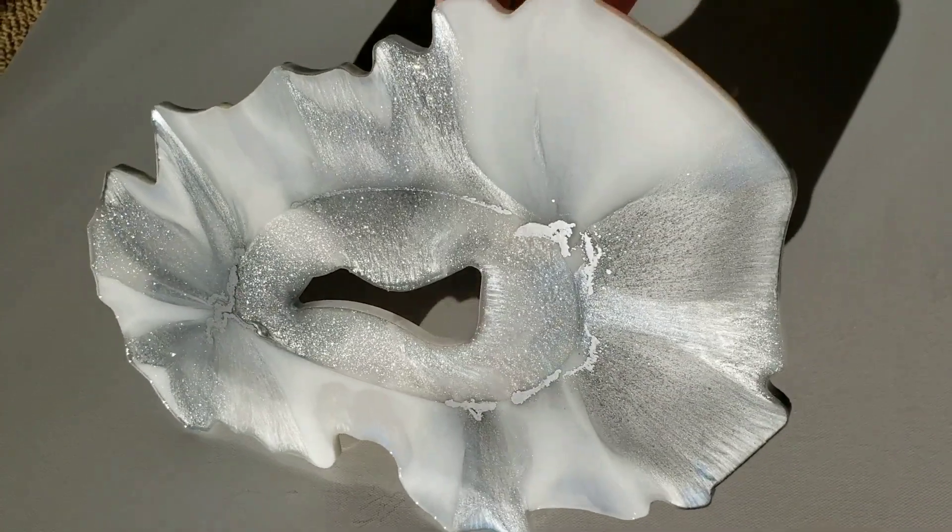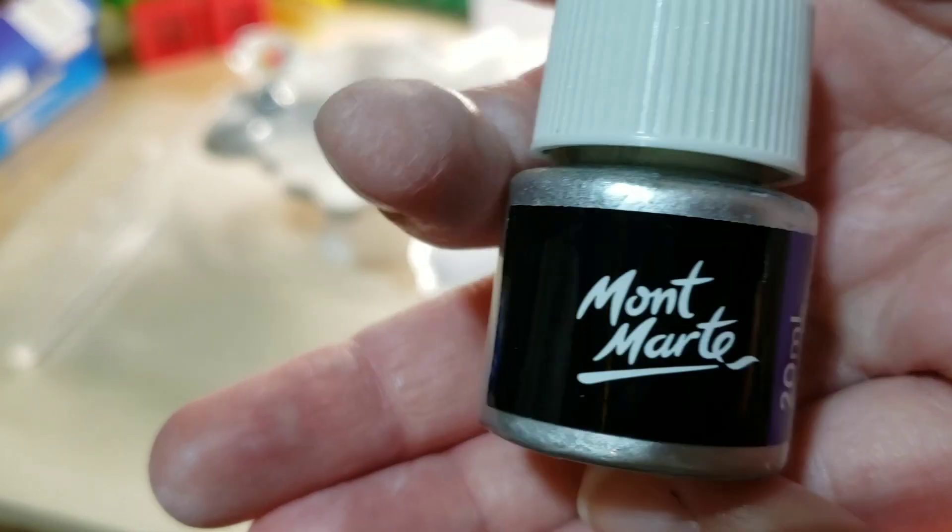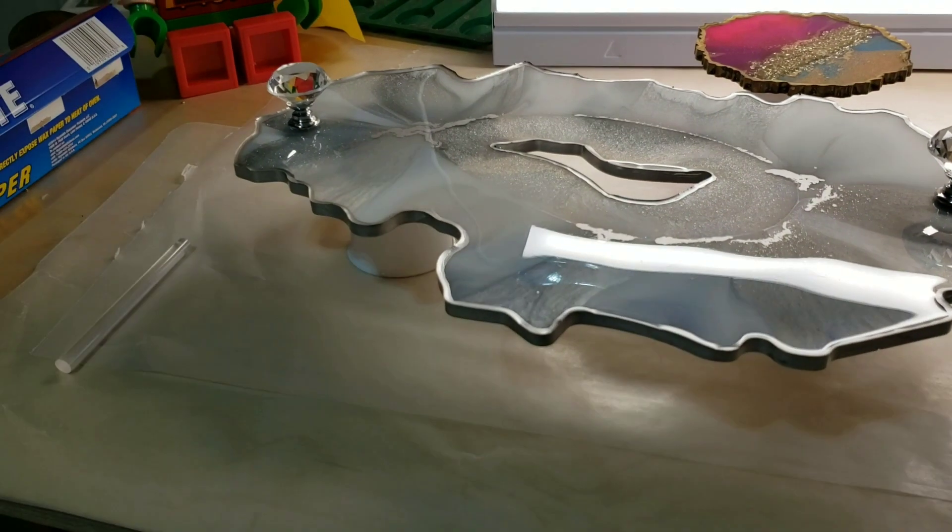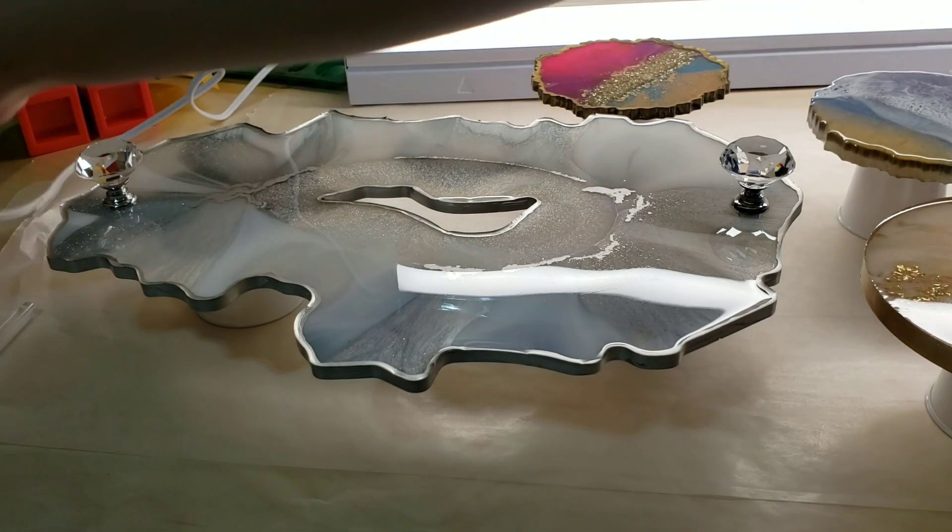Off camera I took this silver gilding paint from Amazon and just painted the edges and the rim of the tray here.